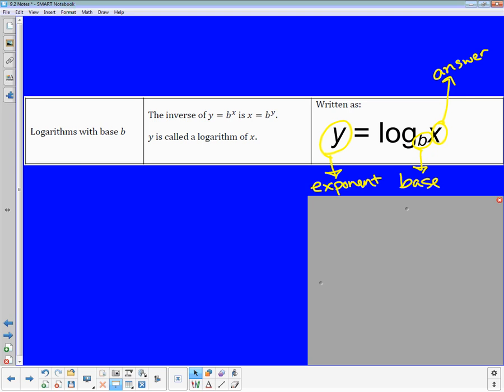So b was the base. The new answer was our exponent, because we've switched them and solved for the other part. And now the answer that was original is in the question. So we're going to practice writing back and forth between exponentials and logarithms.